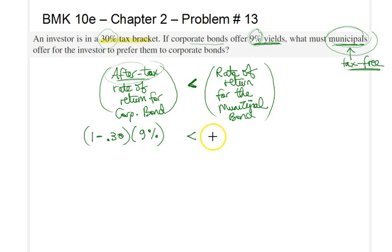So we calculate (1-0.30)(9%) which yields 6.3%. Therefore, the rate of return for the municipal bond should be at least 6.3% for investors to prefer municipal bonds over corporate bonds. That solves our problem. Hope to see you in our next video. Thank you.